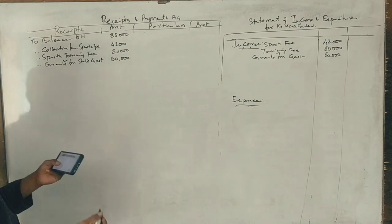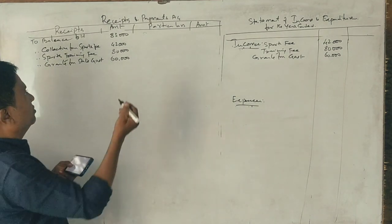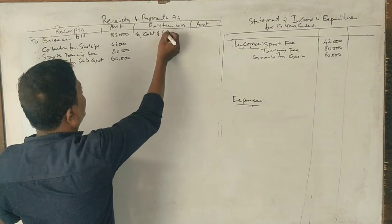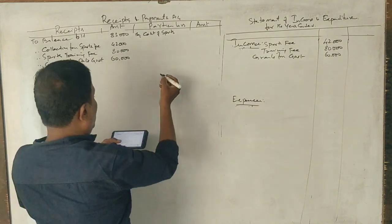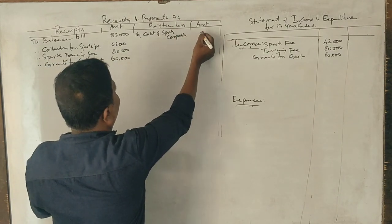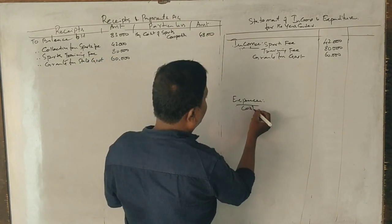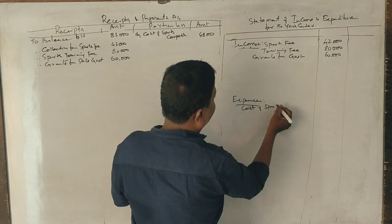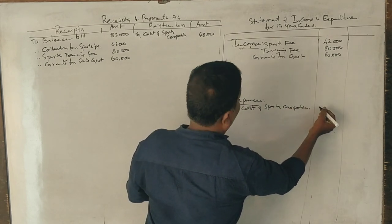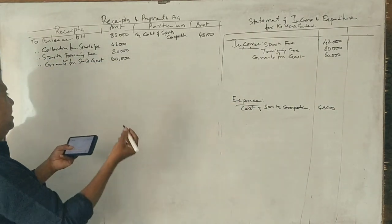Cost of sports competition. Cost and expenses, so cost of sports competition, yes sir, 48,000. Cost of sports competition, 48,000. Next, prize distribution expenses.